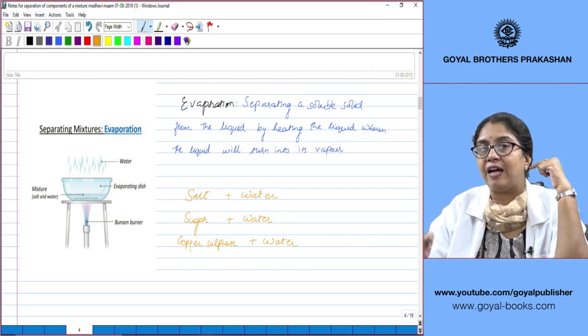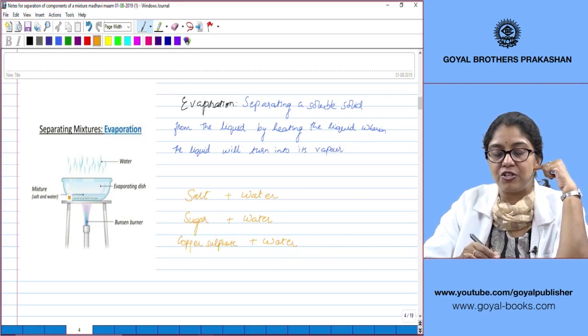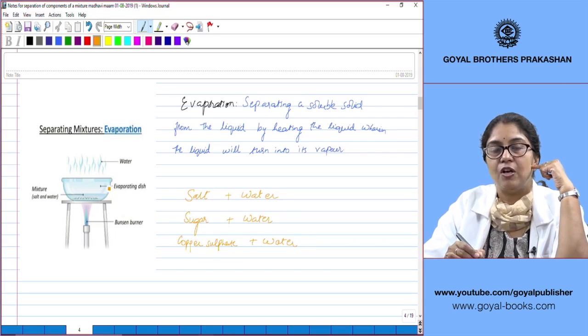We carry out this by taking the mixture in an evaporating dish. An evaporating dish, children, is a shallow dish.